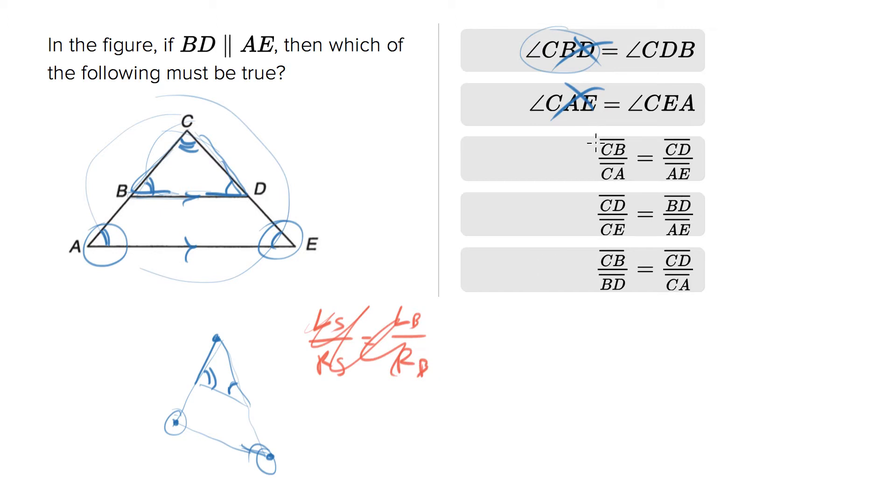So we've got CB over CA. So this is left side of the small over the left side of the big versus CD, right side of the small. So this would work if it was CE, but it's not, it's AE. That doesn't work. So this one's out.